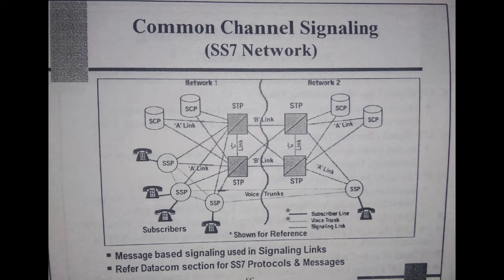Let's first understand the basic structure using the SS7 network. We can see that there are certain links connecting to each other. There are Network 1 and Network 2, and via SCP, SSP, SCP points and STP points are present, as we can see in this network.